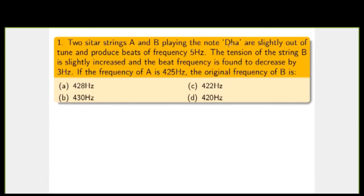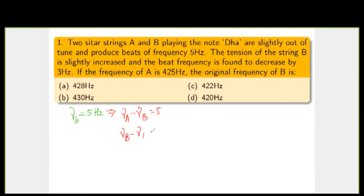Two sitar strings A and B are playing the same note Dha, but because of slight variation they are producing beats of 5 hertz. Initially the beat produced is 5 hertz, and the beat equals the difference in frequencies. So there are two possibilities: either ν_A minus ν_B equals 5, or ν_B minus ν_A equals 5, depending on whichever is higher.